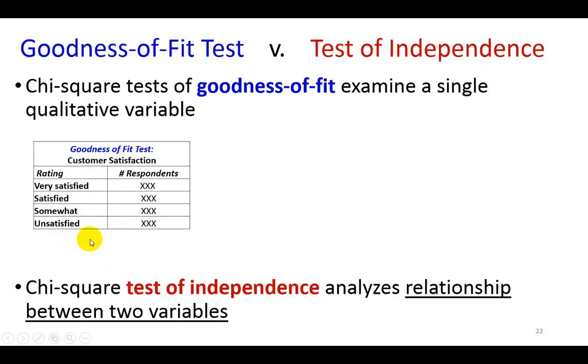Now, chi-square test of independence, on the other hand, looks at the relationship between two variables. So, here are some examples.